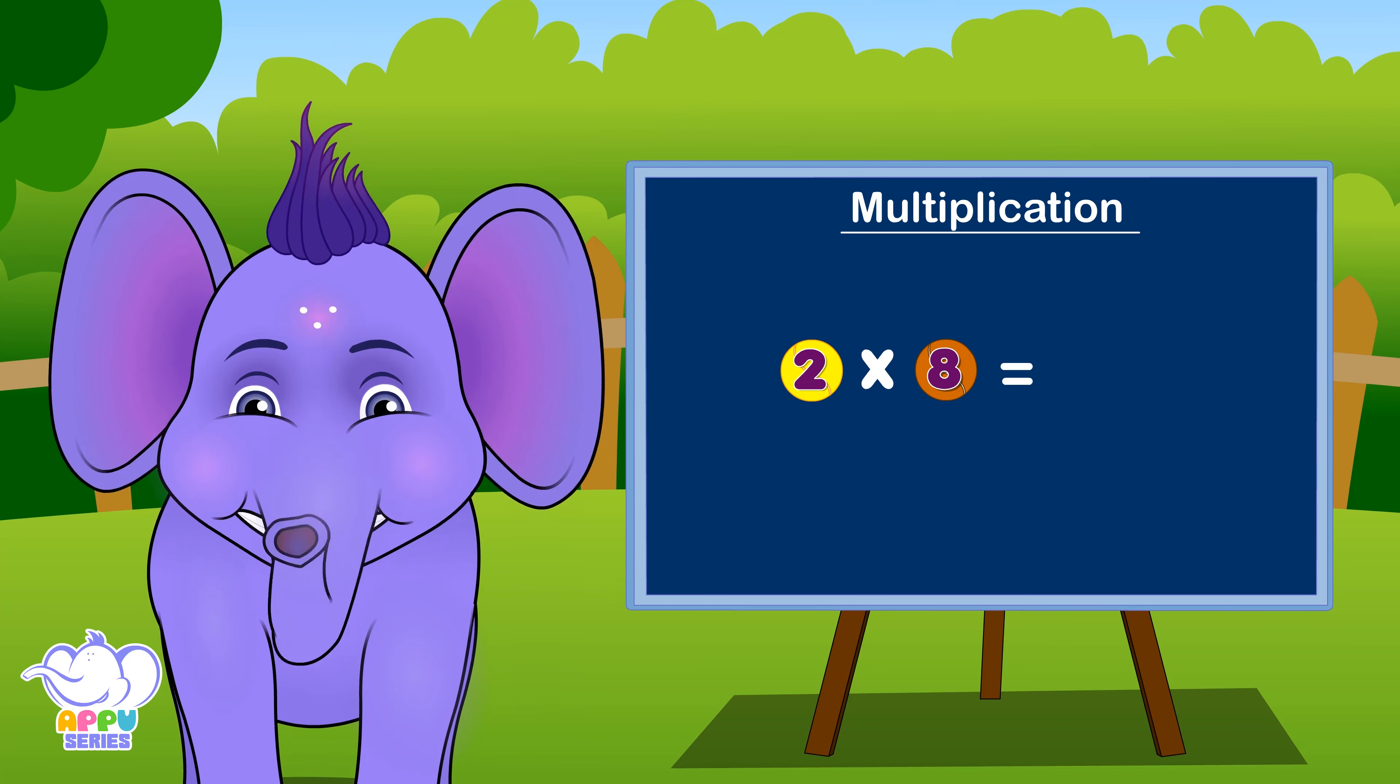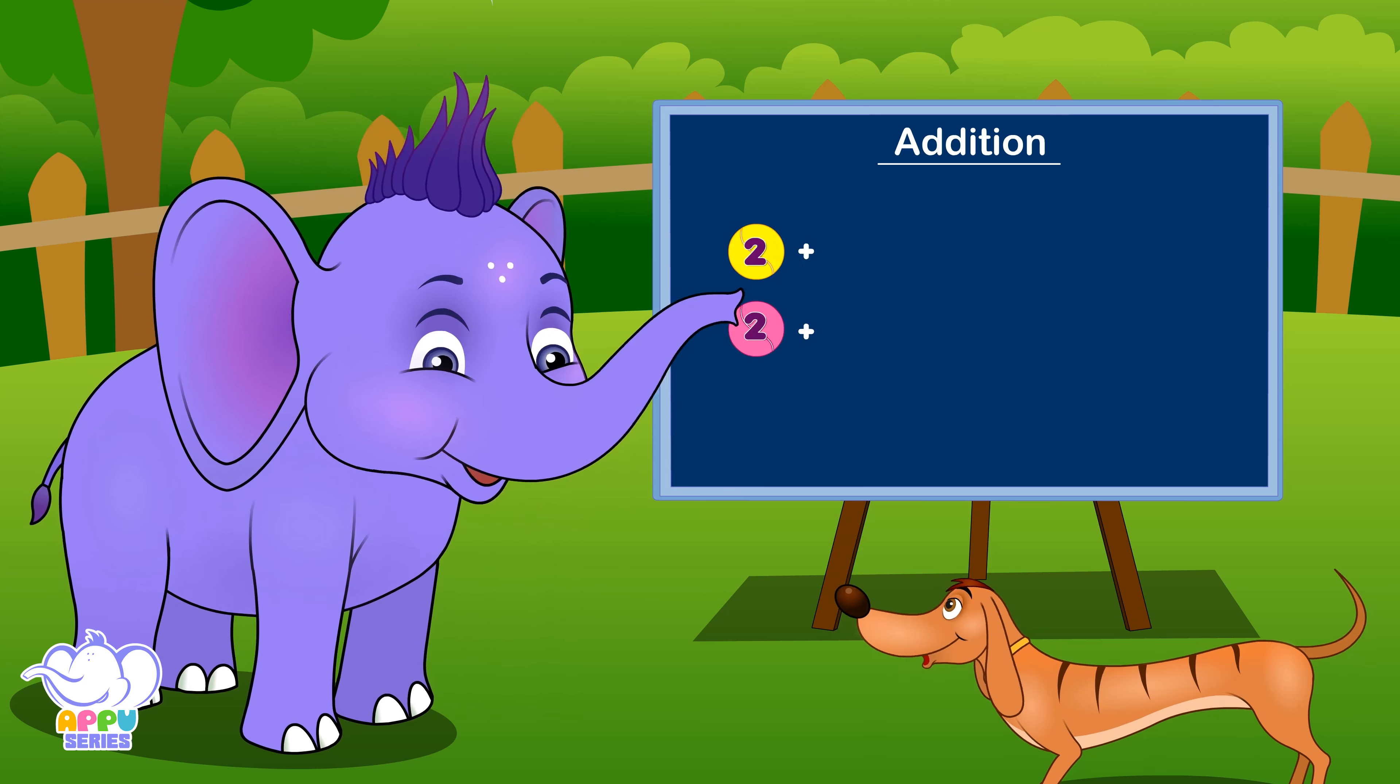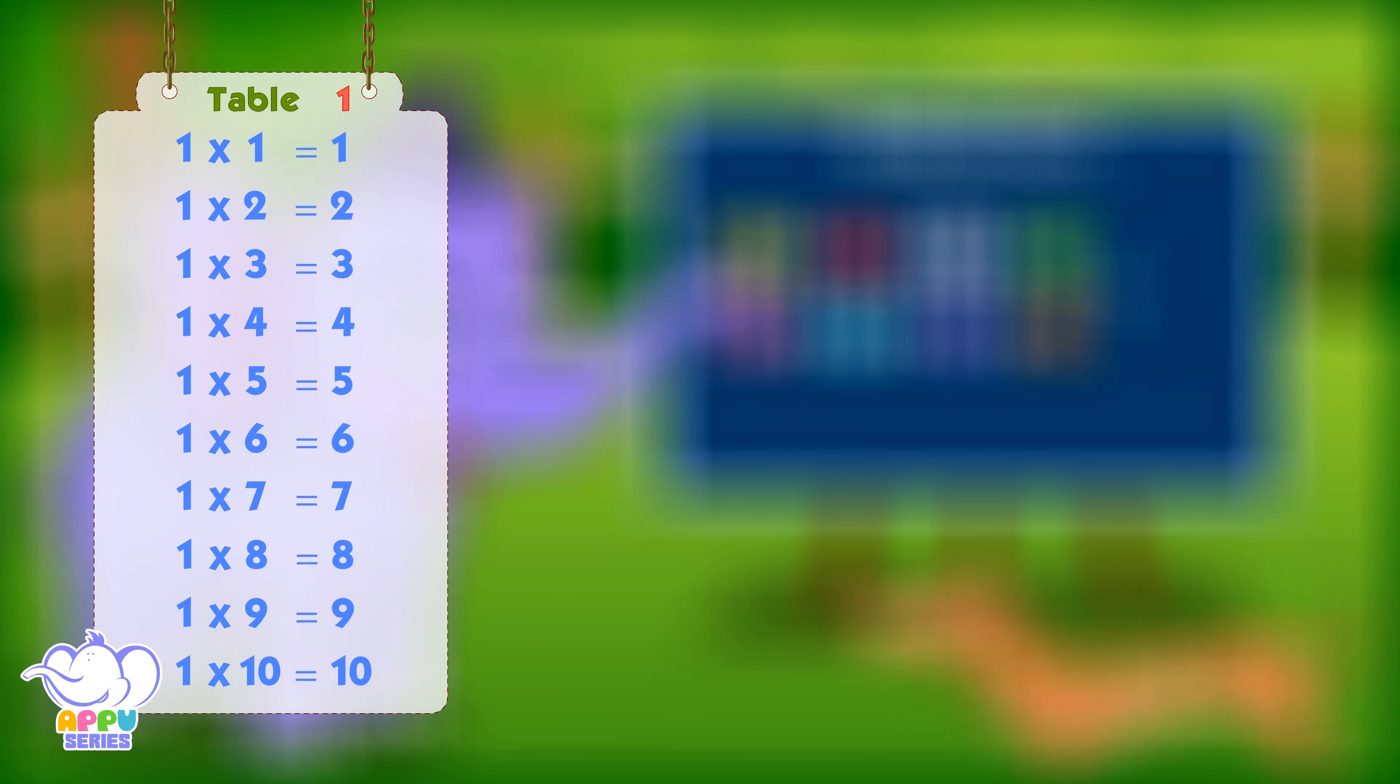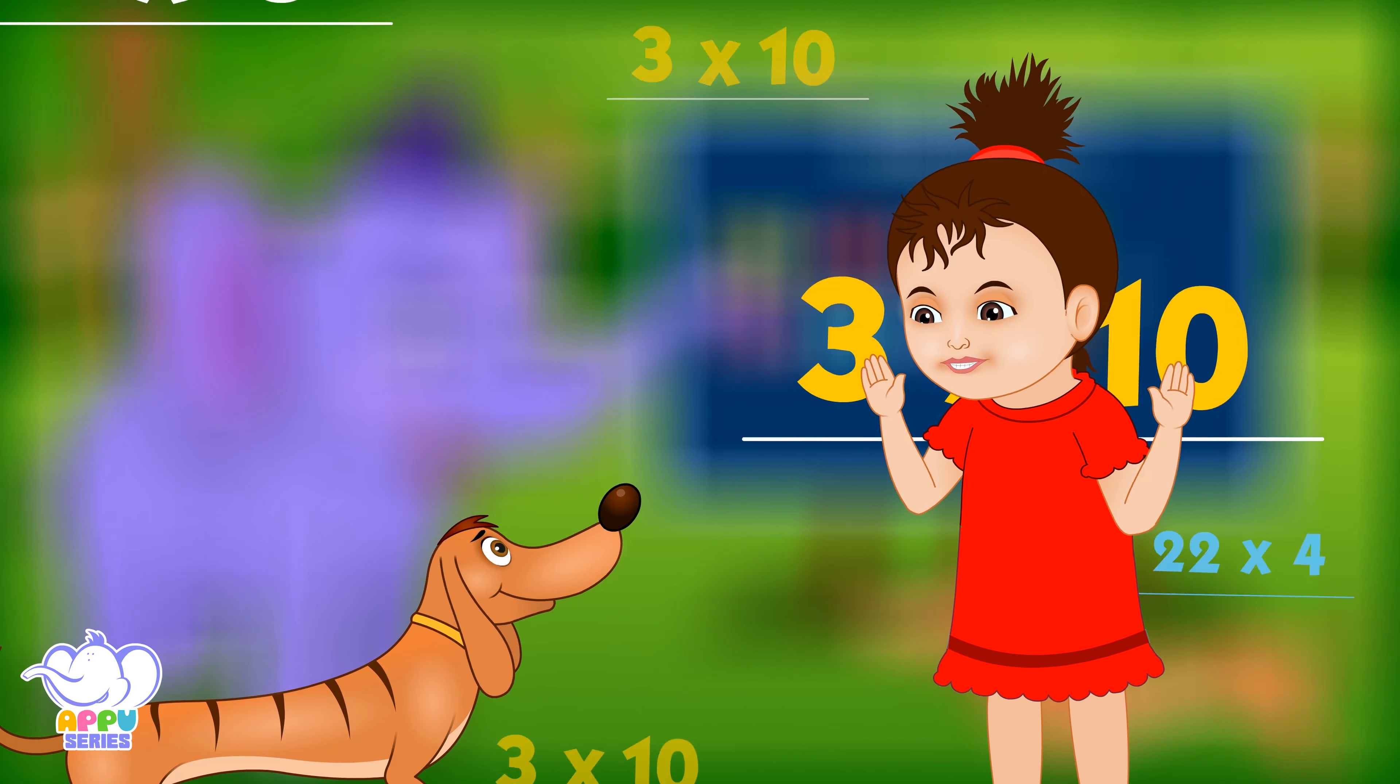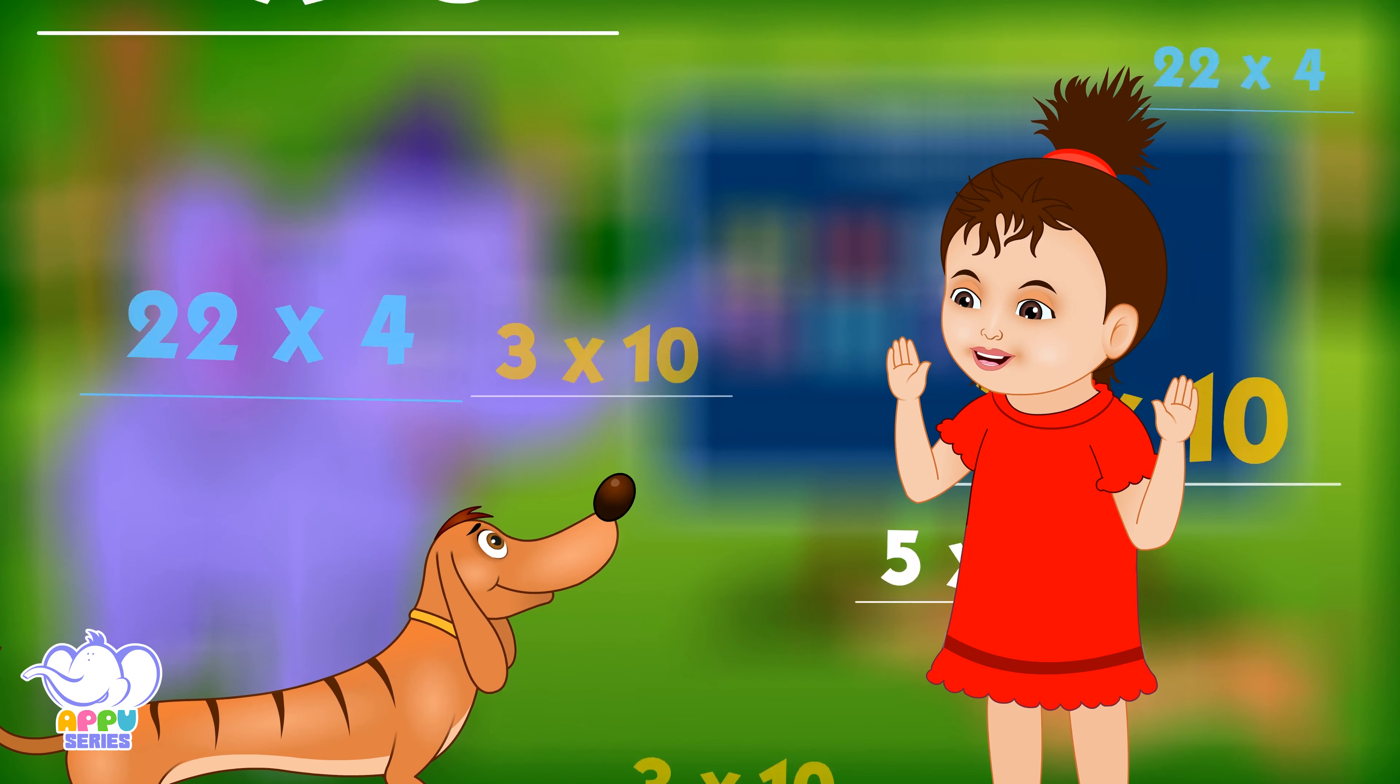Let's multiply, multiply. It's easy if you try. It's just repeated addition. Let's try to find solutions. Learning timetables really pays. Now you'll know in how many ways. Makes it easy to recall. Now find out where and how they fall.